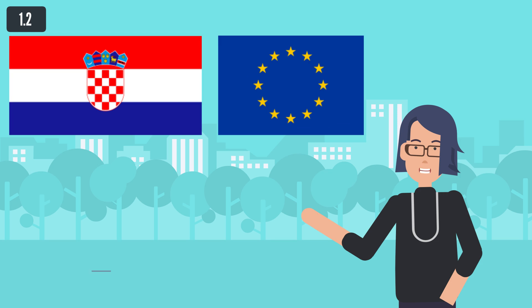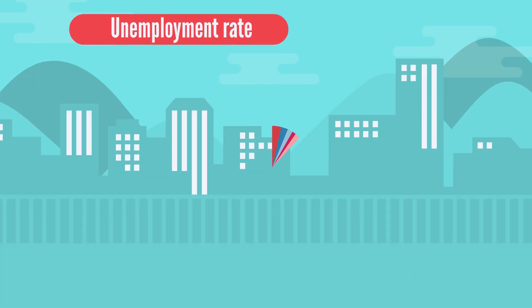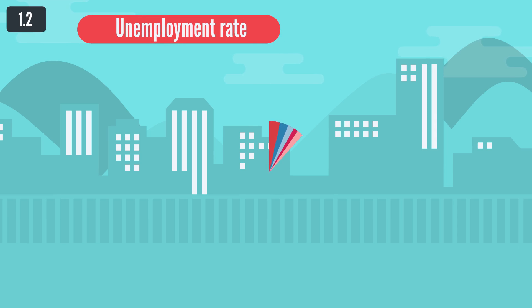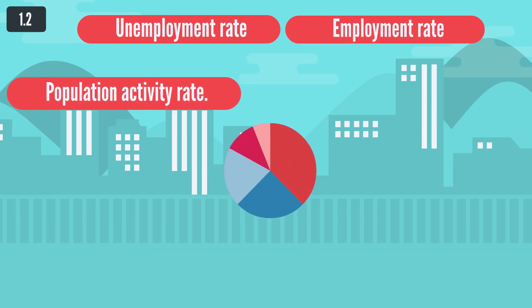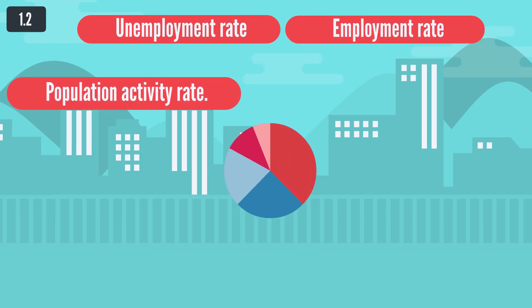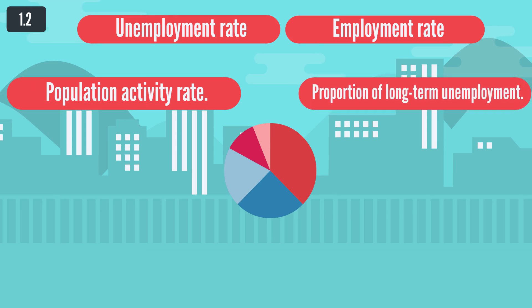When the current state of the labor market in Croatia is compared with other EU members, it reveals an unfavorable structure and unsatisfactory dynamics of change. Croatia is ranked among the top three worst EU members according to basic indicators including: unemployment rate, employment rate, population activity rate, proportion of long-term unemployment, proportion of very long-term unemployment, average working life, and youth unemployment rate.